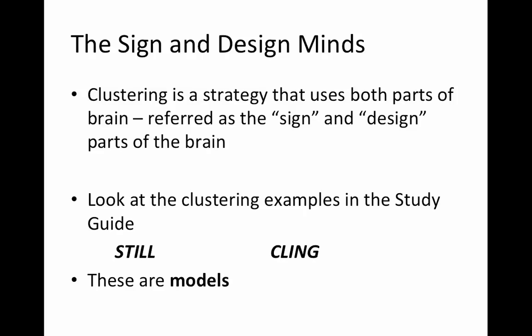If you look at the examples of clustering in the study guide, you'll see how beginning with a single word or topic lets you generate ideas — you can be creative, let your mind flow, and think of thoughts and concepts you might not initially consider. A cluster also lets you see how those ideas are connected. The two examples in the study guide are on the words 'still' and 'cling.' These are models for you to understand what clustering looks like, and we use models a lot in this course so you understand what you're meant to do without directly copying the model.